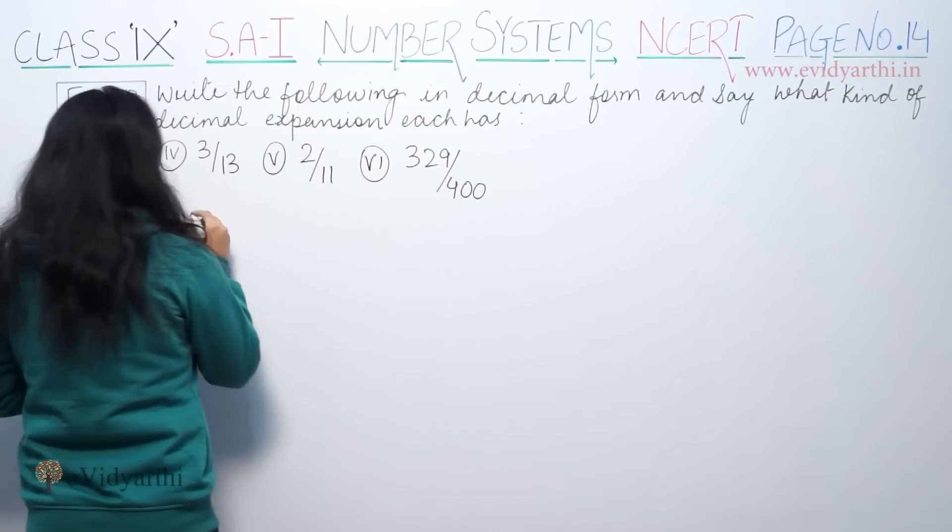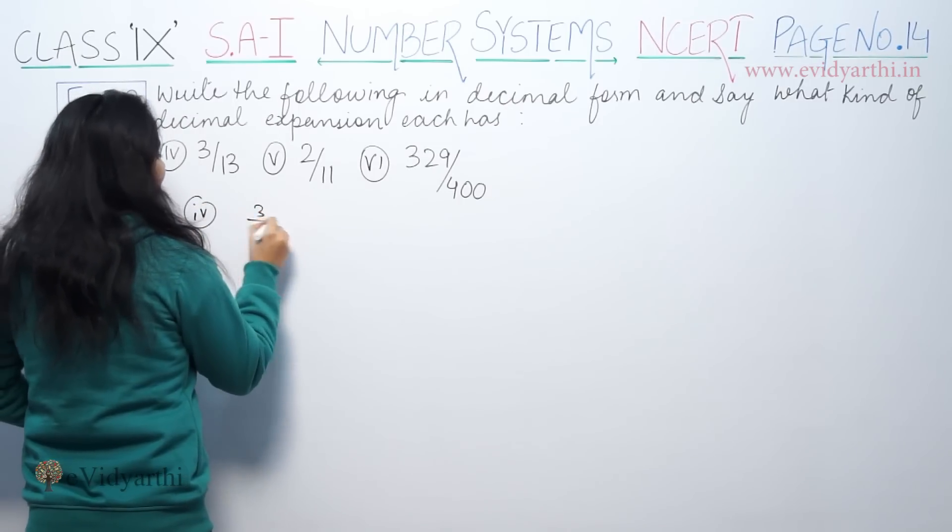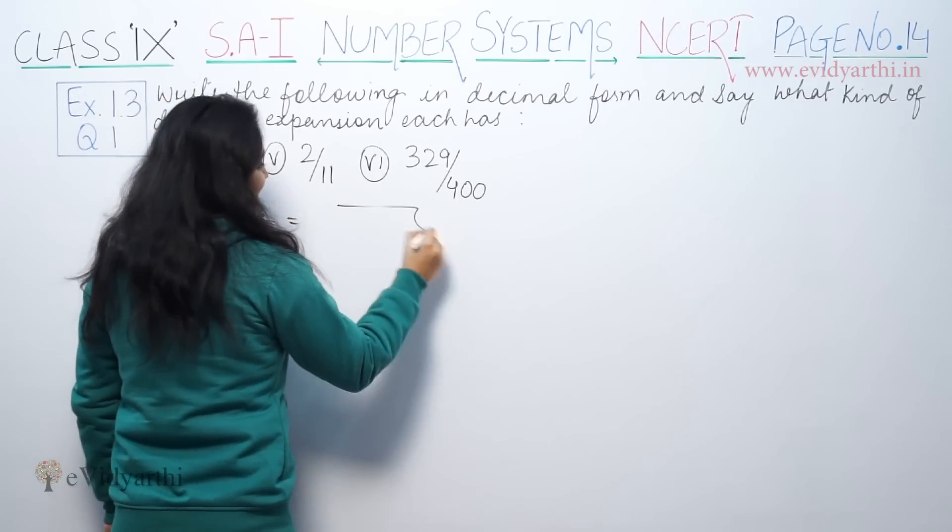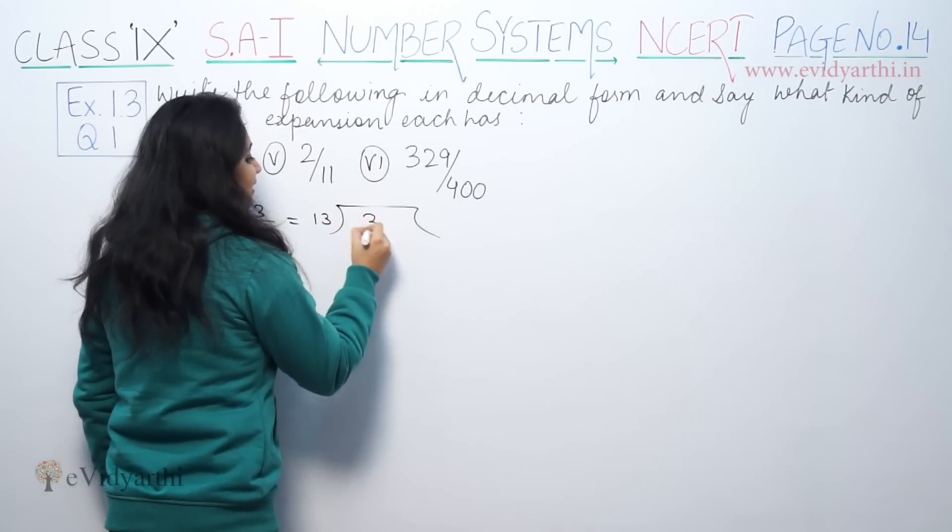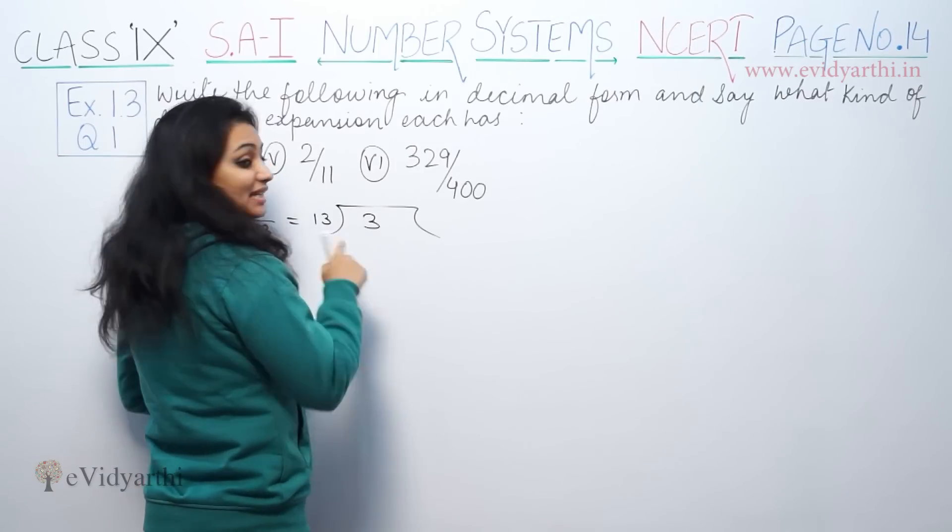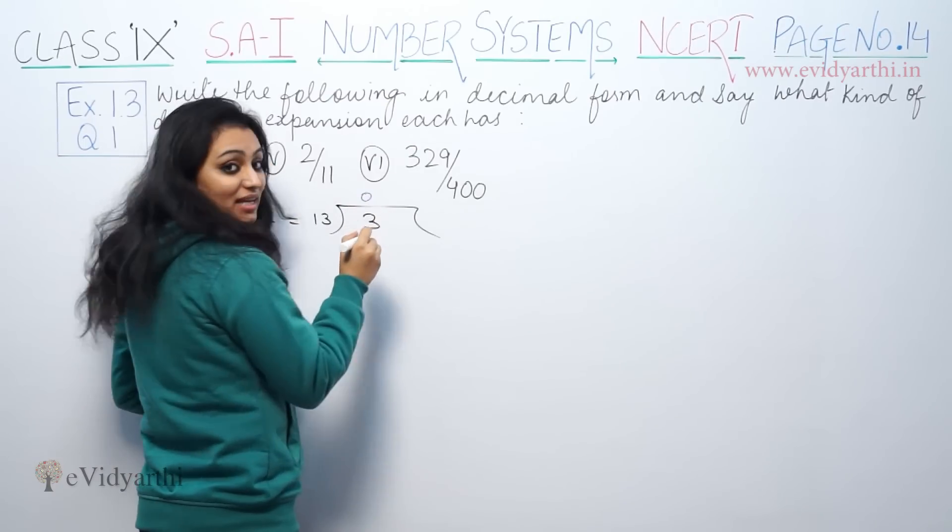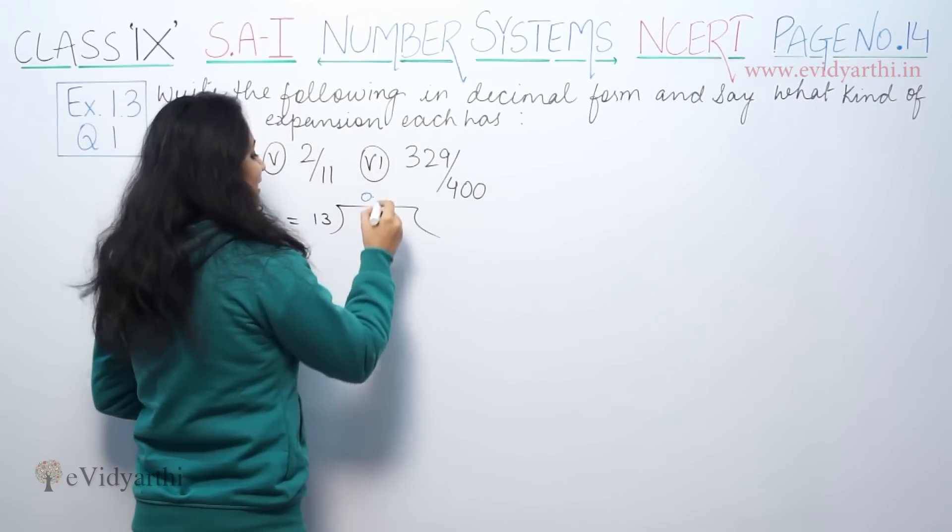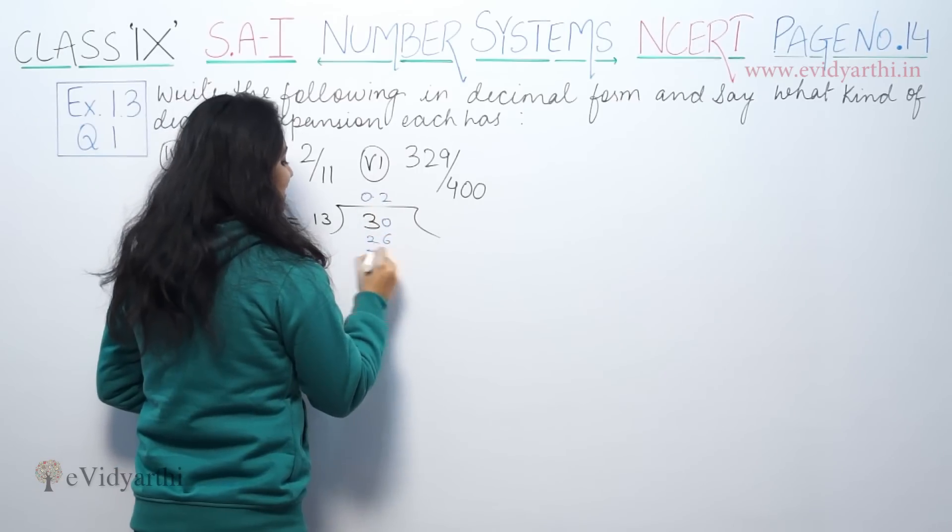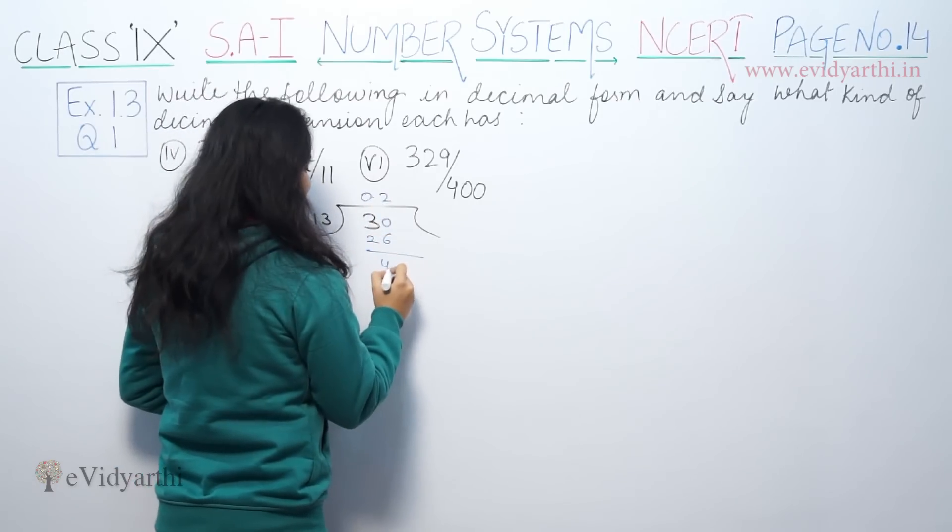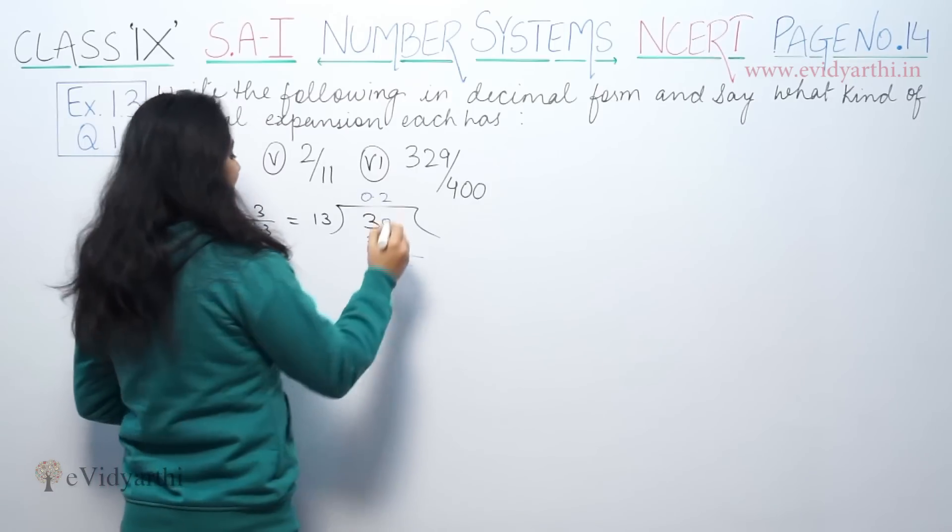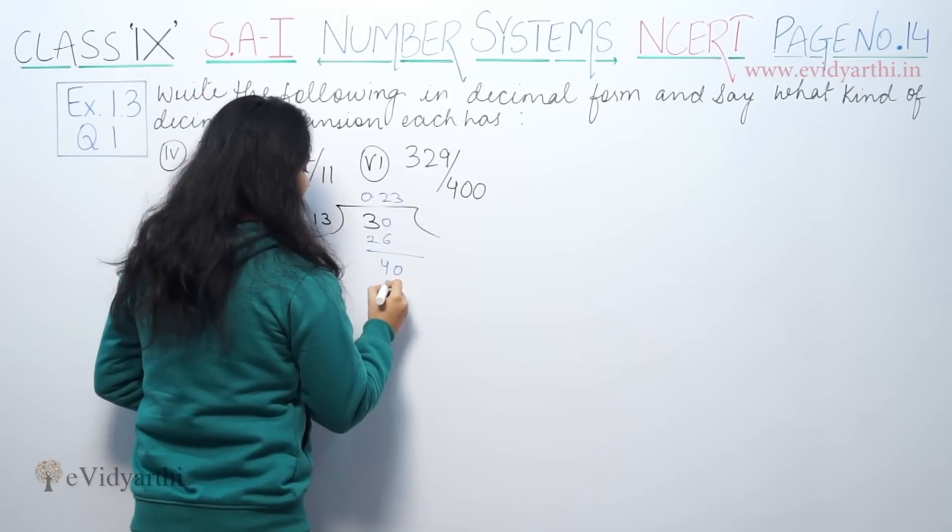So part number 4, 3 by 13. Now let's divide. This is 13, now 3. So in 13, there is no 3. So we have put a decimal. So 30, 13 is 26. Then we have 4. Now 40, 13 is 39.